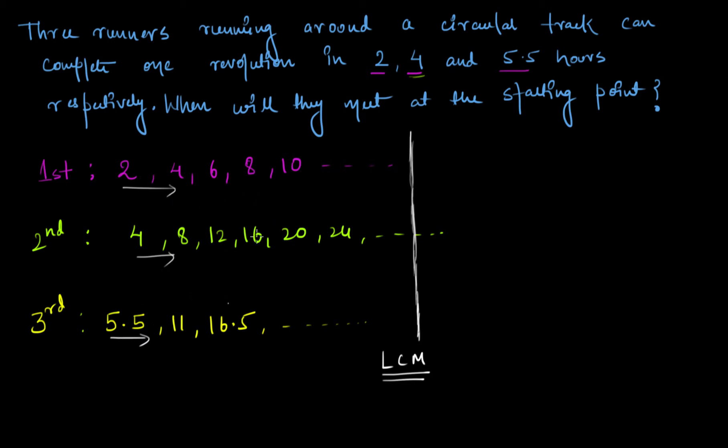So 2, 4, and 5.5 - we have a decimal in the picture. Let me rewrite this: 2 upon 1, 4 upon 1, and 5.5 is actually 11 upon 2, because 11 divided by 2 gives 5.5.